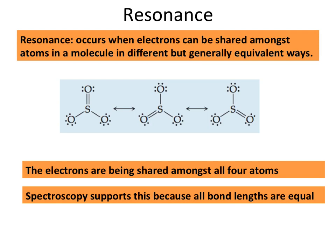We're going to be discussing resonance in relation to Lewis dot structures. Resonance happens when electrons are able to be shared between multiple atoms within a compound. If we look at this series of examples, notice that you have three oxygens bonded to sulfur. The reality is that we could have double bonded this oxygen, this oxygen, or this oxygen, and these representations show that resonance process. Instead of having two single bonds and a single double bond, what we actually have is basically one and a third bonds in each sulfur-oxygen interaction.